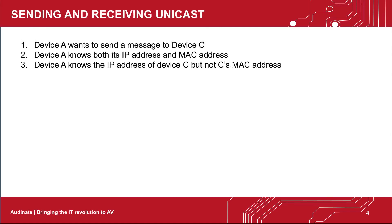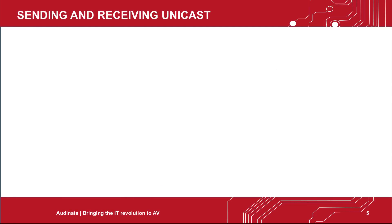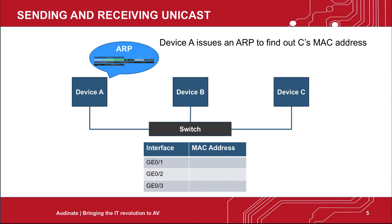Let's look at how sending and receiving unicast works. In this example, device A wants to send a message to device C. Device A knows both its IP address and MAC address. Device A also knows the IP address of device C, but it doesn't know device C's MAC address. In order to find device C, device A issues an ARP request. The broadcast message goes everywhere.